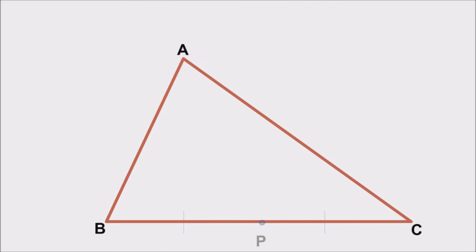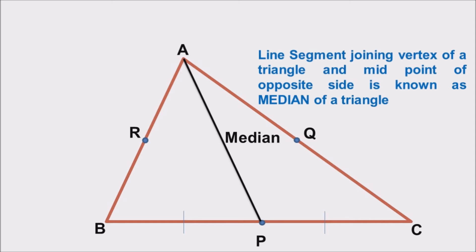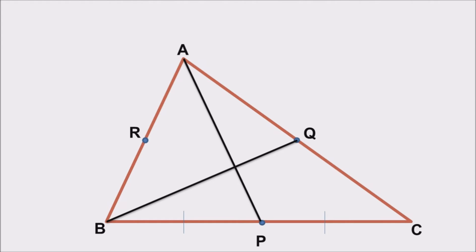Now take midpoints of each side of the triangle — P, Q, and R. Join A to P. AP is known as the median of a triangle. Median is defined as a line segment joining a vertex of a triangle and the midpoint of the opposite side. Let's draw one more median from B to Q, so we now have two medians.